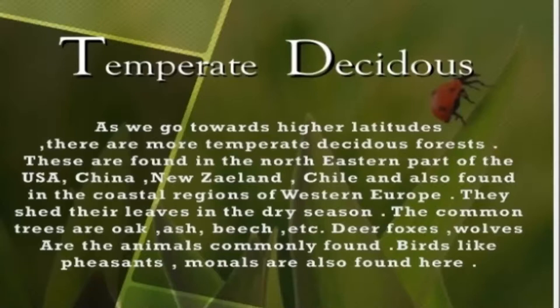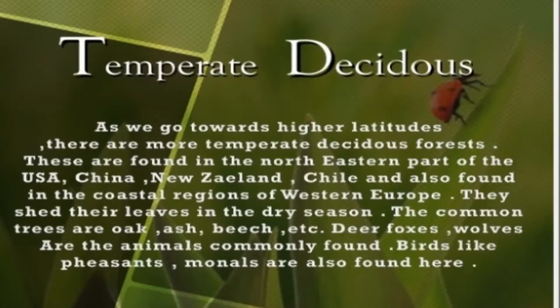Another important type is the temperate deciduous forest. This forest sheds its leaves in a specific month of the year. As we go towards the higher latitudes, there are more temperate deciduous forests. These are found in the north-eastern part of the USA, China, New Zealand, and also in the coastal regions of Western Europe. They shed their leaves in the dry season. The common trees are oak, ash, beech, etc. The animals found there are deer, foxes, and wolves, which are the common animals of the temperate deciduous forest.